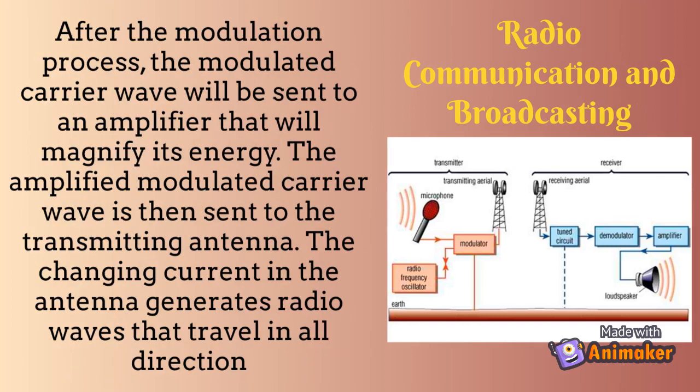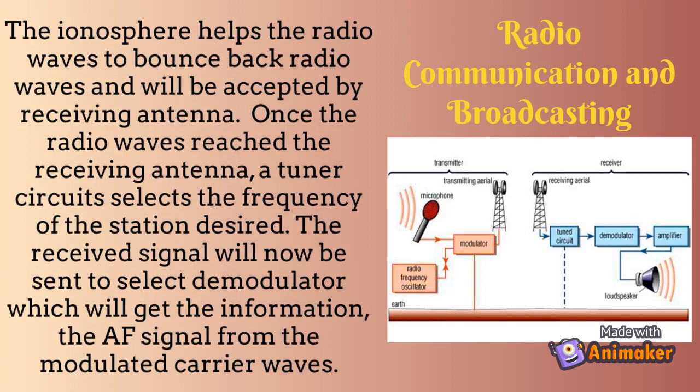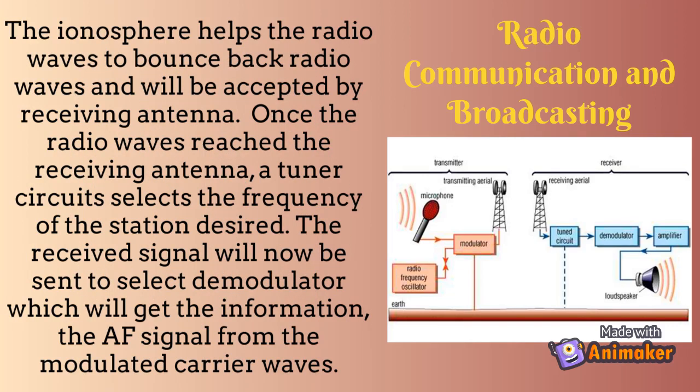After the modulation process, the modulated carrier wave is sent to an amplifier that magnifies its energy. The amplified modulated carrier wave is then sent to the transmitting antenna. The changing current in the antenna generates radio waves that travel in all directions. The ionosphere helps bounce the radio waves back, and they are accepted by the receiving antenna.